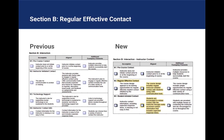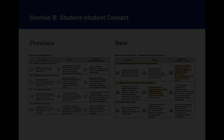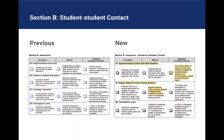Section B was divided into instructor contact and student to student contact, which reflects changes in Title V and its inclusion of student to student contact. Regular effective contact among students was more clearly defined to reflect changes in Title V.